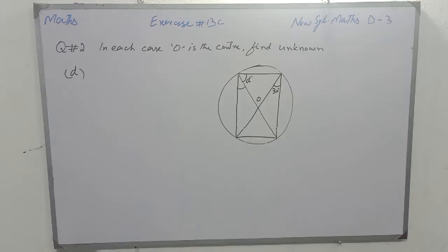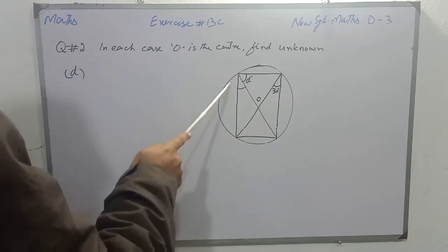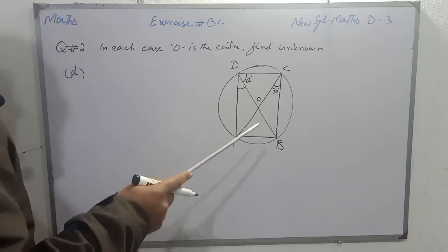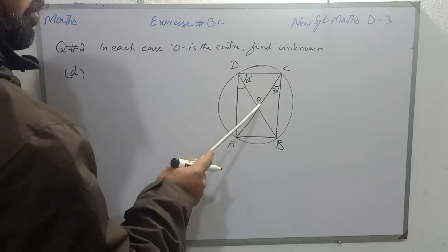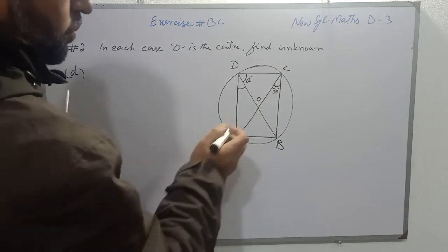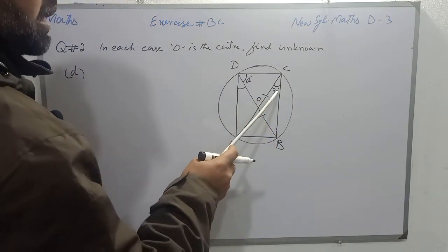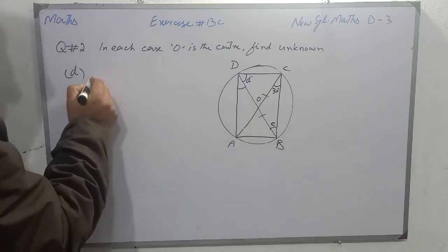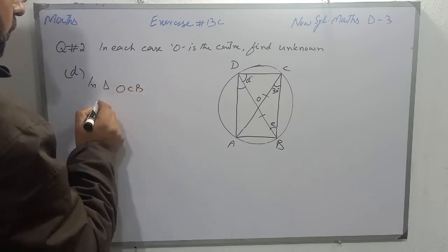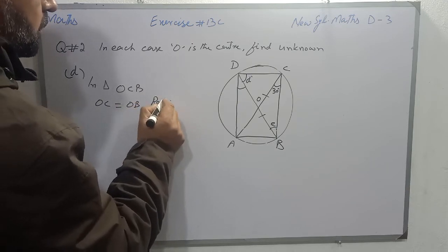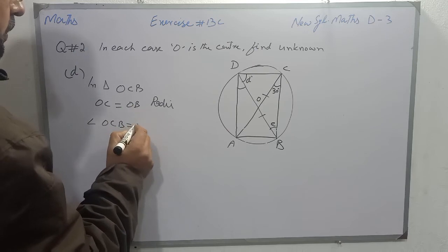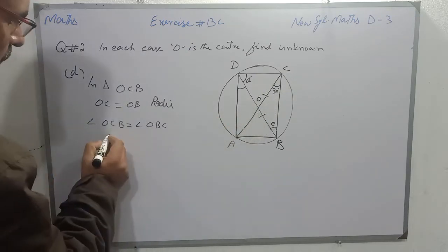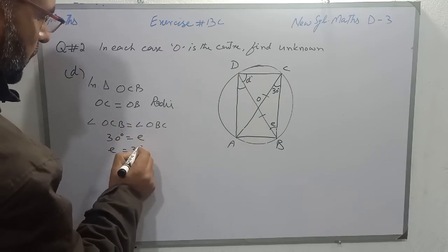Students, part D: there is a circle with center O with points A, B, C, and D. We have to find angle D. First we will discuss triangle OCB, in which OC and OB are equal because they are radii of the same circle. I name the base angles as angle E. Since OC equals OB, angle OCB equals angle OBC. If angle OCB is 30 degrees then angle E will also be 30 degrees.